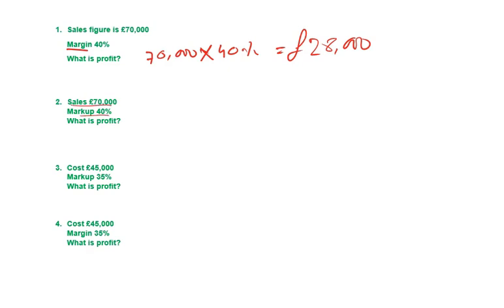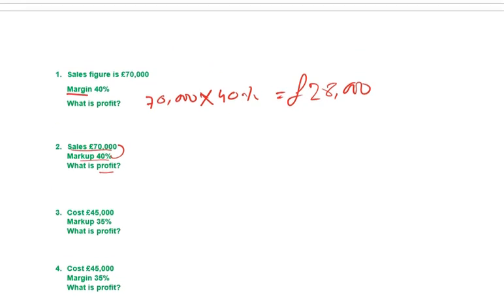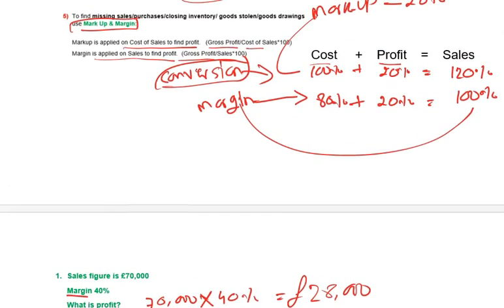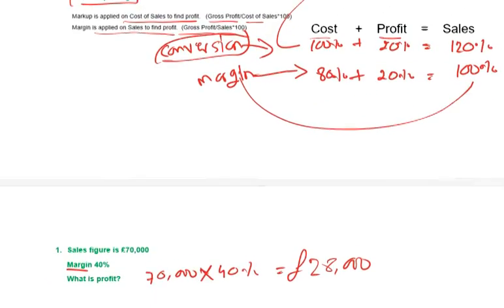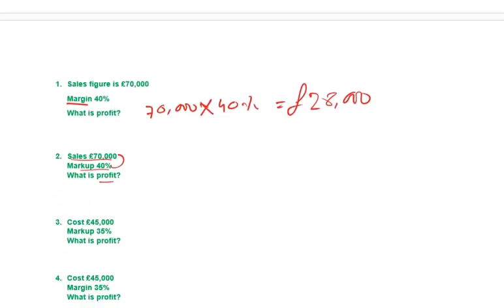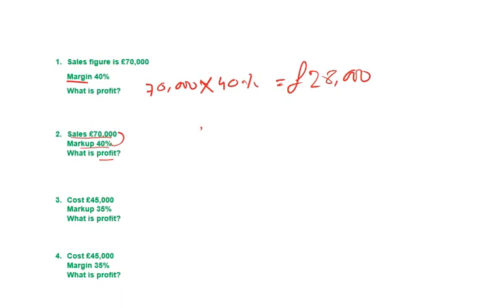Example two: selling price is seventy thousand and markup is forty percent — what is the profit? You cannot apply forty percent on seventy thousand directly, because markup is applied on cost. Follow the formula: cost plus profit equals sales. If it is markup, cost is one hundred percent.